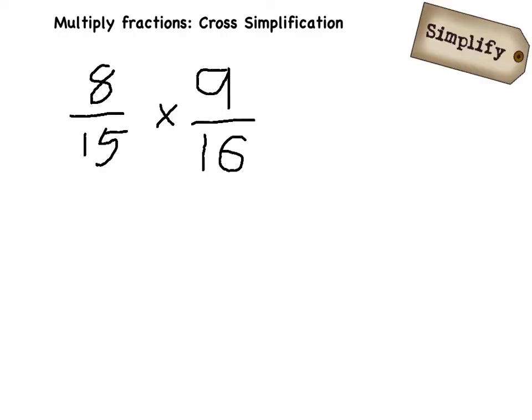The rule of cross-simplification says that I can simplify 8 not only with 15, as I can simplify any fraction, but also with my 16, which of course is going to work out better because 8 is just half of 16. Or 9 I can simplify with my 15 when I'm multiplying, and this is why it works.